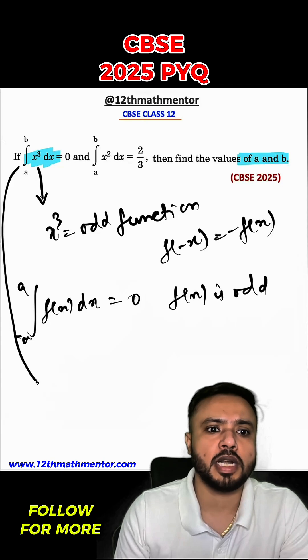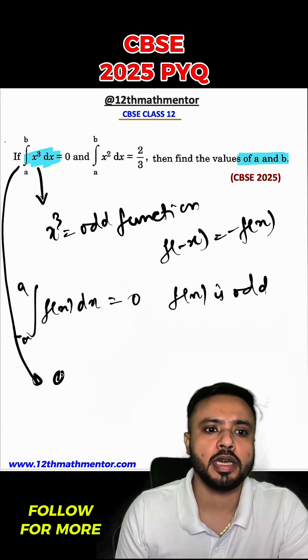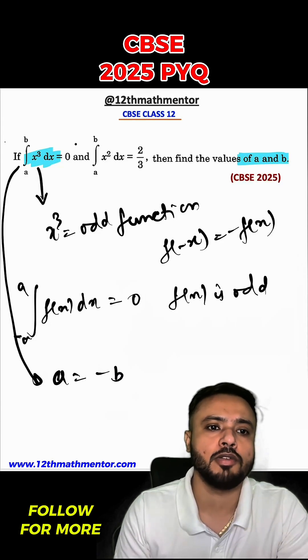Using this property, I can say that the integral of the limit is a. So I can assume that a is basically negative b. Because when negative b to b, this integral value is going to be 0.